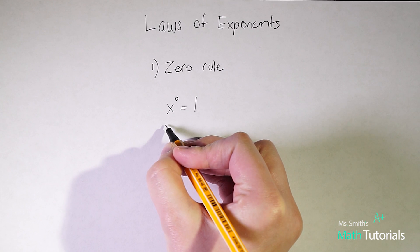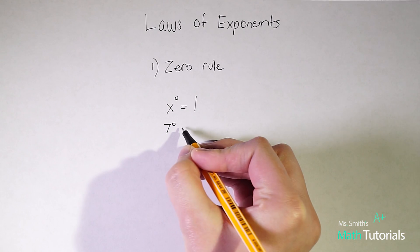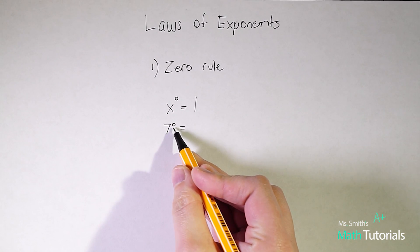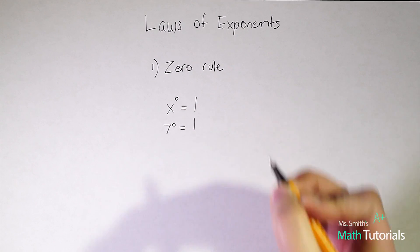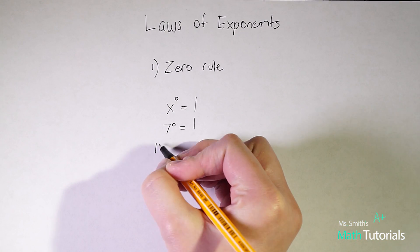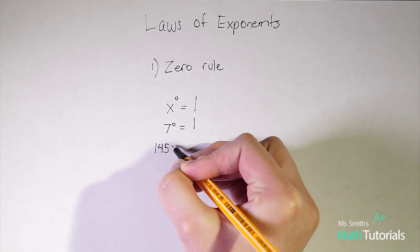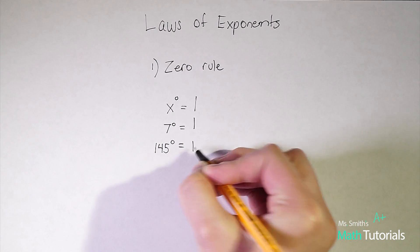The same thing applies for a number, so you could have a number like 7 brought to the power of zero, it'll also be one. We could try something even a little bigger, 145 to the power of zero will be one.